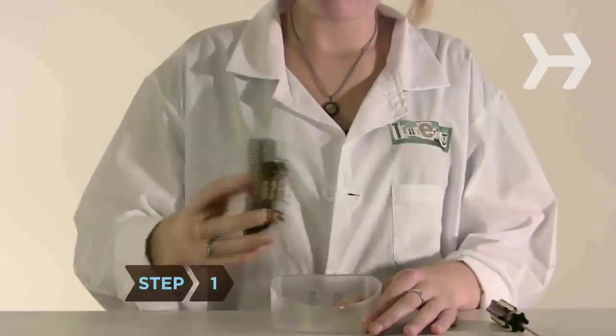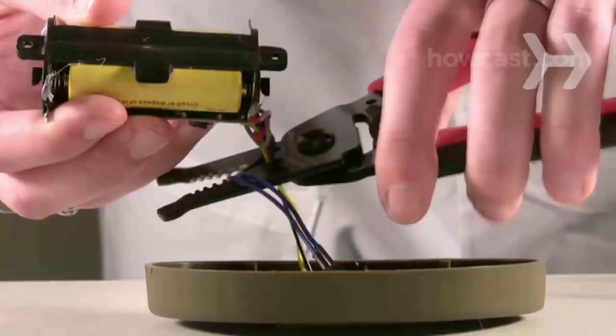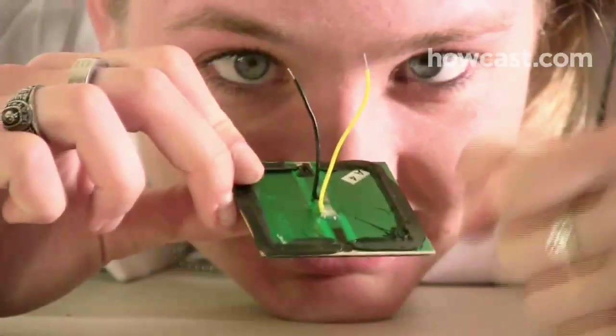Step 1. Carefully remove the solar panel from the light fixture with a screwdriver. It should have two wires soldered to a rechargeable battery. Detach the wires using the wire cutters and strip the ends with the wire strippers.